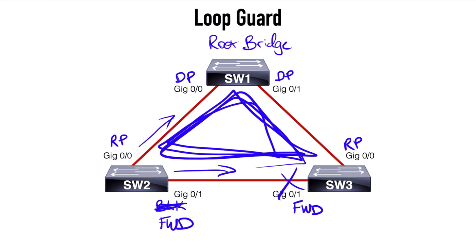Loop Guard is guarding against a situation where an alternate or backup port can become a designated port and move into a forwarding state. With Loop Guard in place, if BPDUs aren't received on a non-designated port, the port would move into a loop-inconsistent blocking state, instead of transitioning through the listening, learning, and eventually forwarding state, which would create a potential loop.